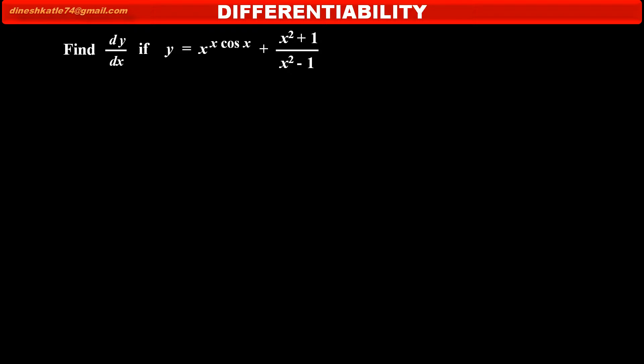We have to find dy by dx if y is equal to x raised to x cos x, plus x square plus 1 upon x square minus 1.